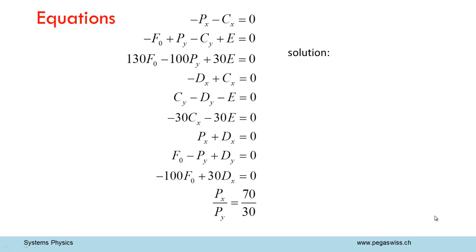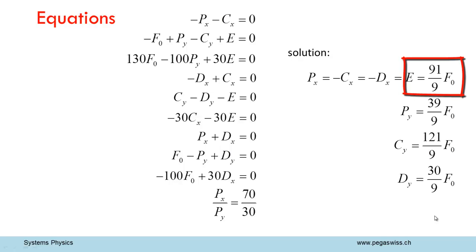Forces Cx and Dx are negative. This means that these two forces act in the other direction. Force Px equals the gripping pressure. Here the other components Py, Cy and Dy have been calculated as well. The greatest force is the one acting on bolt C in y direction. This force is more than 13 times F0.